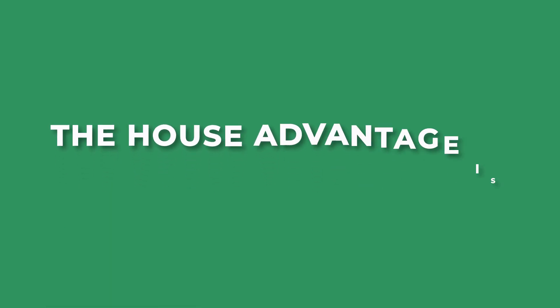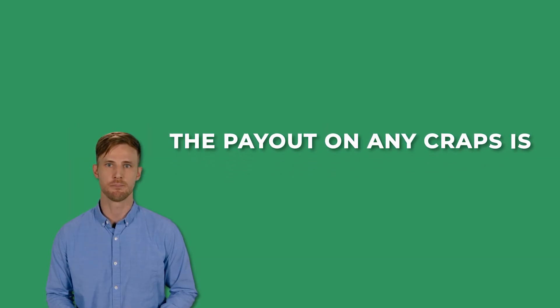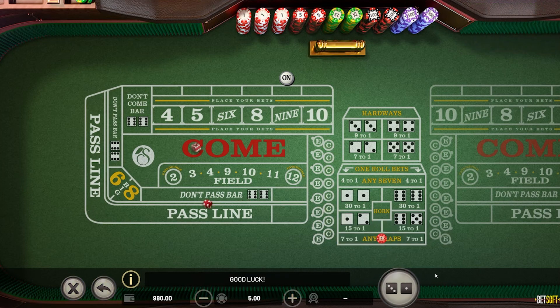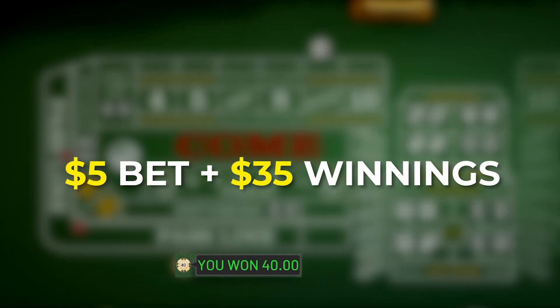The house advantage on this bet is 5.56%, which is relatively lower compared to some other bets on the table. If you're lucky enough to win an Any Craps Bet, the payout is 7 to 1. For example, if you bet $5 on Any Craps and the next roll results in a 2, 3, or 12, you'll receive $35 in winnings.